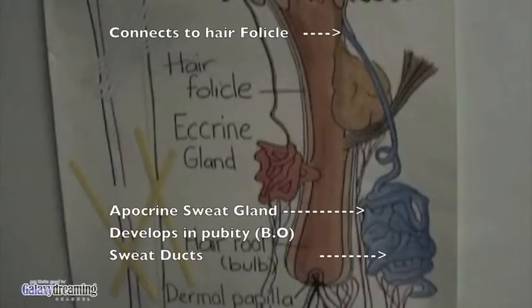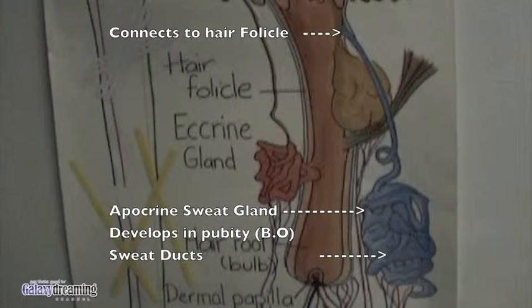The apocrine gland is the adult gland. It becomes active in puberty and is found in the underarm, breast and genital areas. It excretes a milky fluid. This fluid has an odour as it decomposes on the surface of the skin — we know that as B.O.